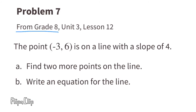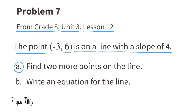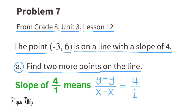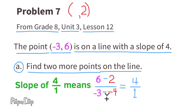Problem number 7, from 8th grade Unit 3 Lesson 12. The point with coordinates negative 3 and 6 is on a line with a slope of 4. Find two more points on the line. Slope of 4 means the rise over run is 4 over 1. Substituting the known point: 6 minus Y equals 4, so Y equals 2. Then negative 3 minus X equals 1, and negative 3 minus negative 4 equals 1, so X equals negative 4. The first new ordered pair is negative 4 and 2.